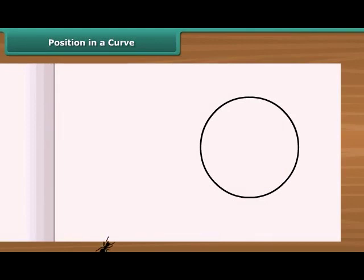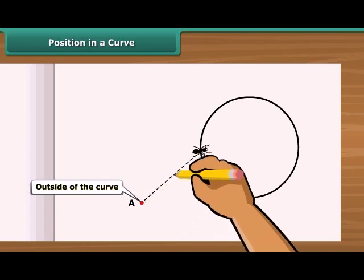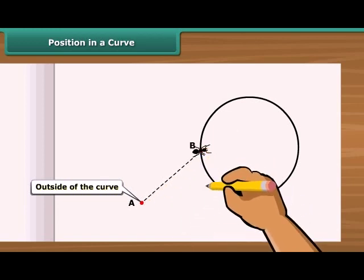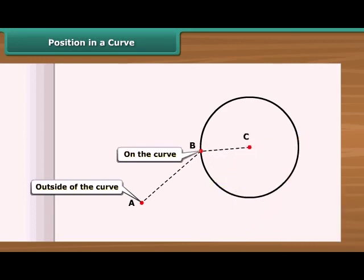Here you see a moving ant with reference to a closed curve. At position A, the ant is at exterior or outside of the curve. At position B, it is on the boundary or on the curve. At position C, the ant is at interior or inside of the curve.